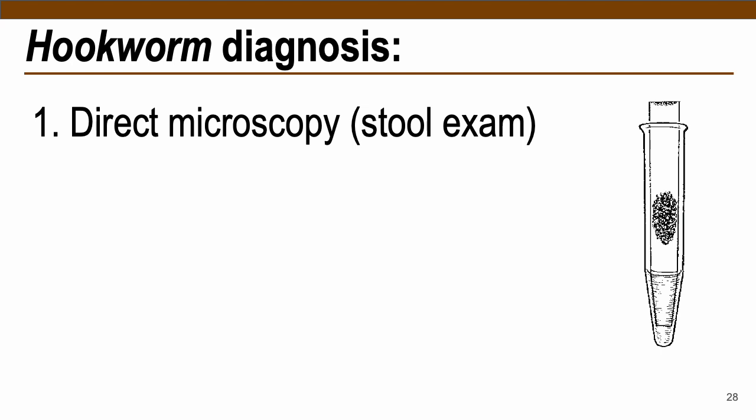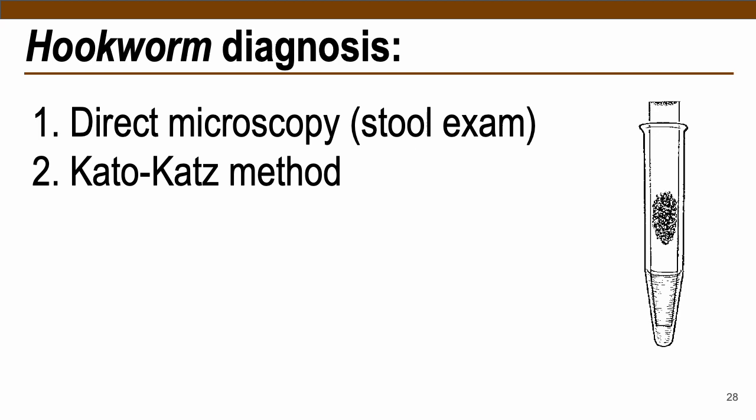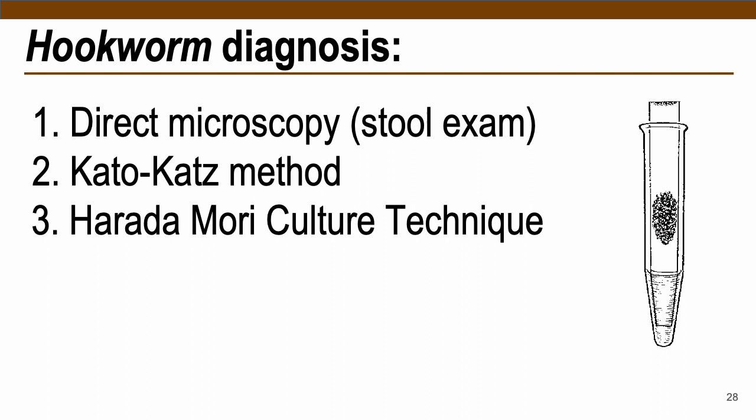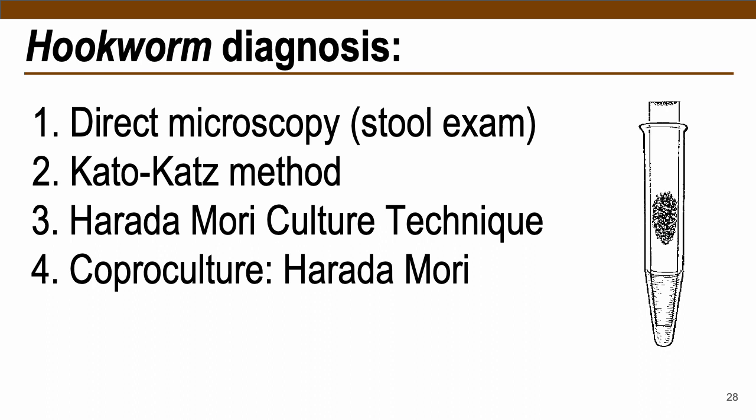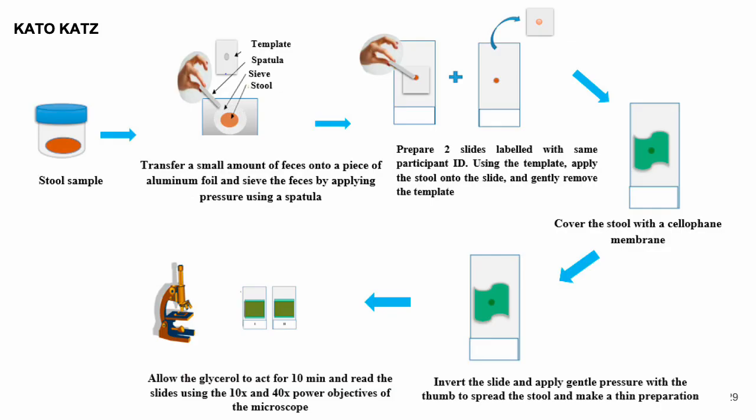For hookworm diagnosis, the commonly used method is direct microscopy: stool or fecal sample examined by saline preparation. The Kato-Katz method increases recovery of hookworm eggs and is qualitative and semi-quantitative. Harada-Mori culture technique and coproculture are used only for surveys and research purposes — cultivating larval forms of hookworm using filter paper with stool or nutrient agar plates.